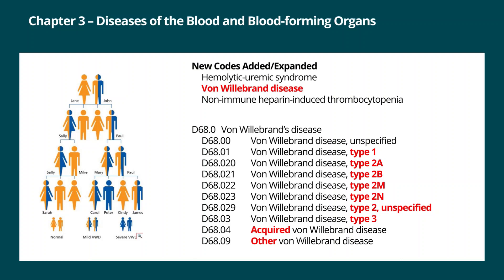The second category expanded is von Willebrand's disease, a common bleeding disorder in which blood does not clot properly. These codes provide further specification about the type of disease such as type 1, type 2a, type 2b, type 2m, type 2n, and type 3. One important note is that all these conditions are classified as CCs — comorbidities and complications in the ICD-10-CM tabular — which means these codes may affect DRG selection and DRG values when assigned along with the primary diagnosis.